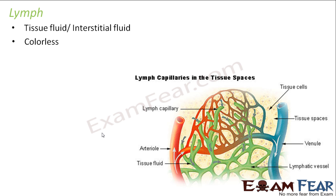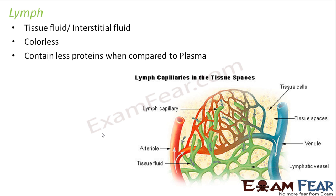From where does lymph get collected? Through the pores in the walls of the capillaries. Capillaries have thin walls with small pores, and through those pores, some amount of plasma, proteins, and blood cells escape into the intercellular spaces. These together constitute the lymph. When compared to blood plasma, lymph contains fewer proteins, because the lymph is formed from substances that come from the blood plasma itself — only a portion escapes through the capillary walls.